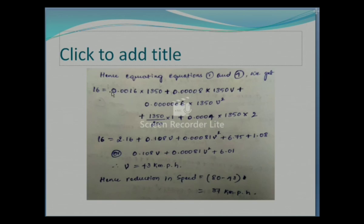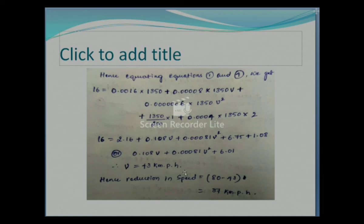Equating hauling capacity to the sum of all resistances from Equation 4, and substituting W = 1350 tons from Case 1 along with D = 2 degrees, I solve for V. The train travels at 43 kilometers per hour when climbing the gradient on a 2-degree curve. The reduction in speed is 80 minus 43 = 37 kilometers per hour.